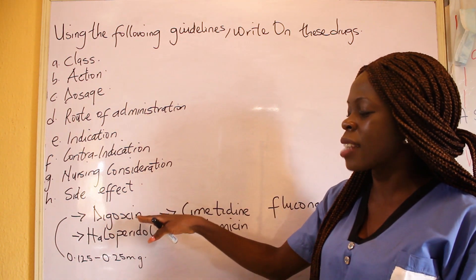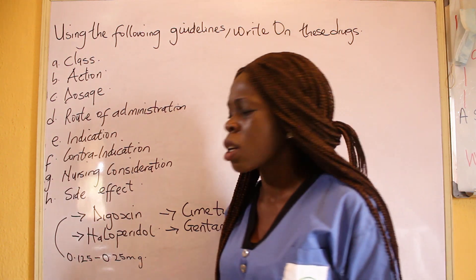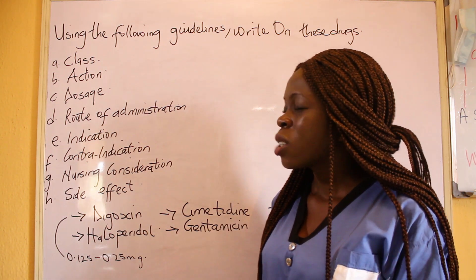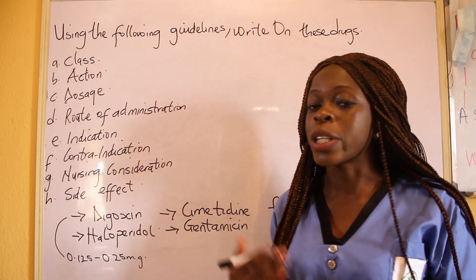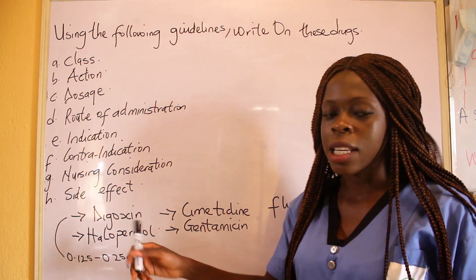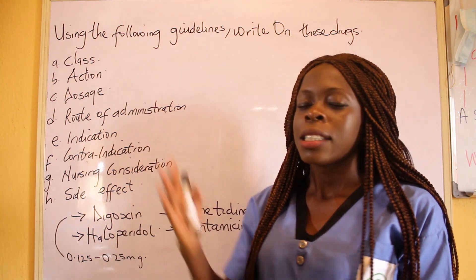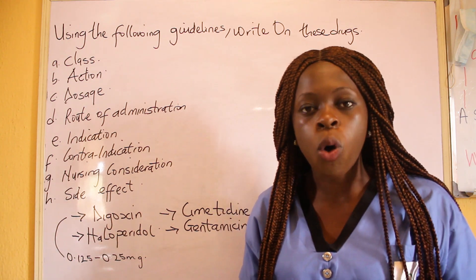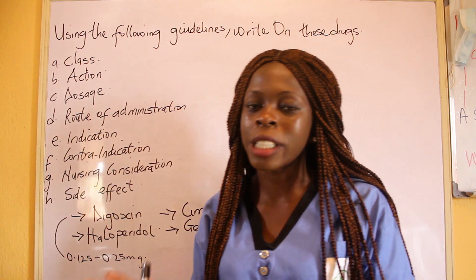Let's assume I'm already in the exam hall and I need to write about digoxin, cimetidine, ranitidine, and all that. What I would do first is check the class of the drugs — do I really know the class? Sometimes, if you don't really know the class of the drugs, there's nothing you can do about it. I'm going to be using digoxin as an example. In terms of class, digoxin belongs to the digitalis. But when you get to the exam hall, you don't know what to write — this class is out of the radar, so we can ignore that.